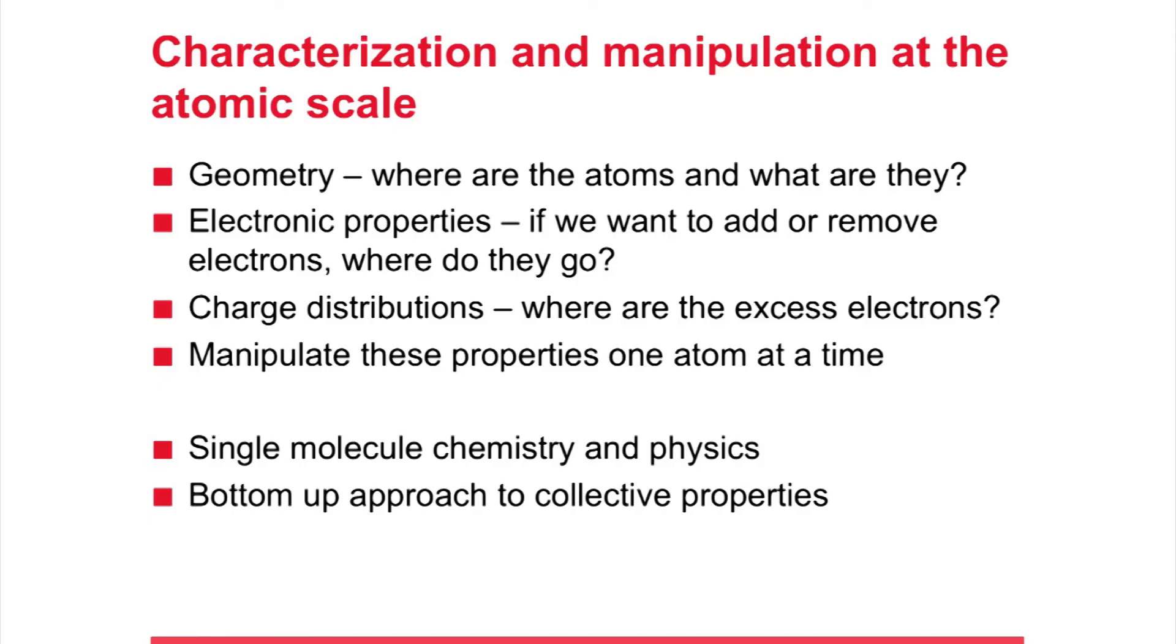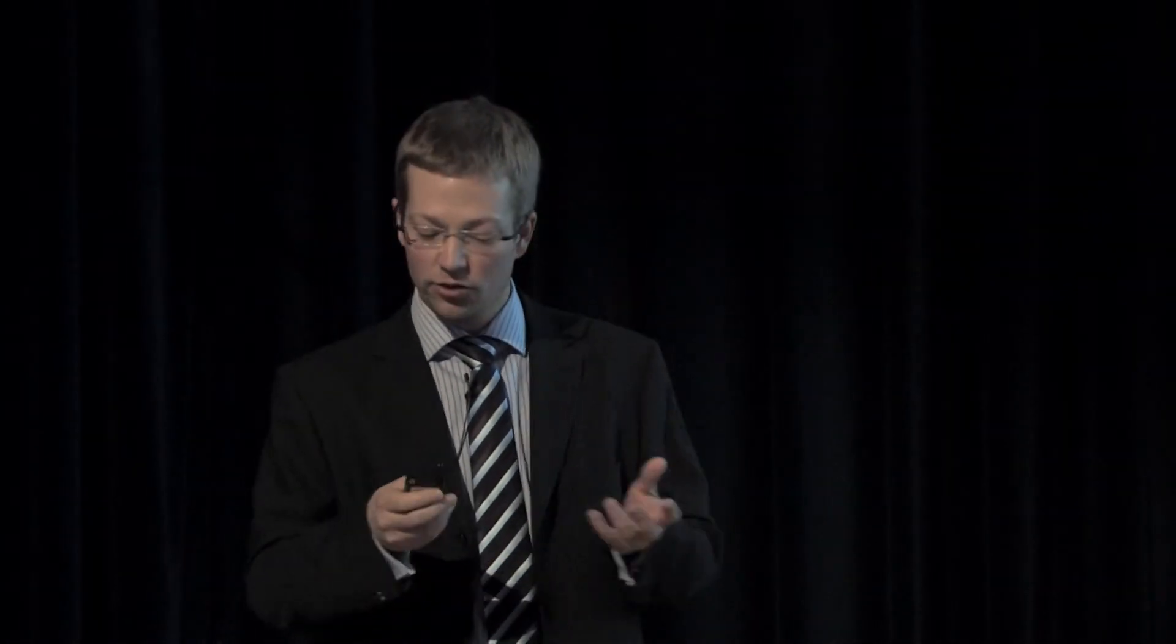What kind of techniques would we like to have at our disposal? First of all we'd like to be able to see the geometry of a surface of an object, the thing we are studying. We'd like to know where are the atoms, we'd like to know which atoms they are, so to do some sort of elemental mapping. Then we also like to know how do the mechanical and electronic properties vary on the atomic scale.